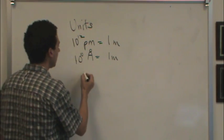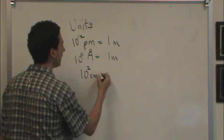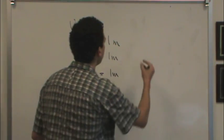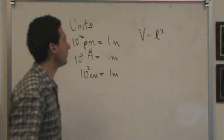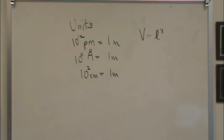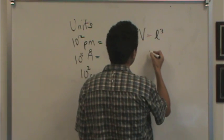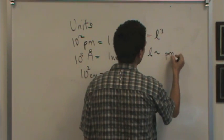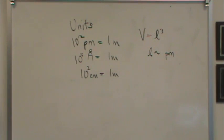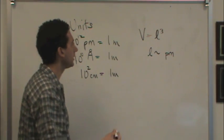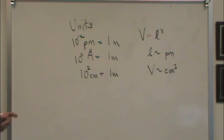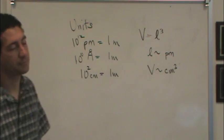So it's quite a convenient unit. And you'll need to know, which you've seen many times, that 100 centimeters is a meter. We're going to be finding the volume of cubes, which would just be the length of the cube cubed. We'll be given the length in units of, say, picometers or angstroms, and asked for the volume in cubic centimeters. So that means I need to convert picometers to centimeters before cubing it in order to find the volume.